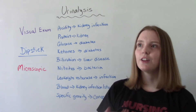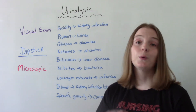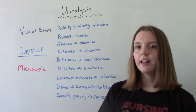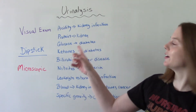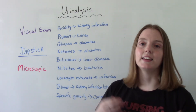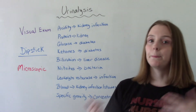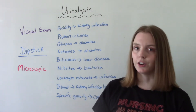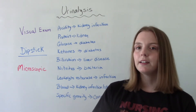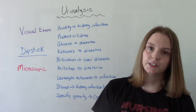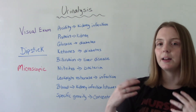Glucose: normally in our urine there is so little glucose that it's barely even detectable. So if you have glucose in your urine, you might be worked up for something like diabetes. Ketones are also very similar to glucose in that they can indicate the need for follow-up testing for diabetes. Bilirubin is not normally found in the urine, so that would be an unusual finding — if it is there, that can be an indication of liver disease. Nitrates in the urine can indicate a bacterial infection.